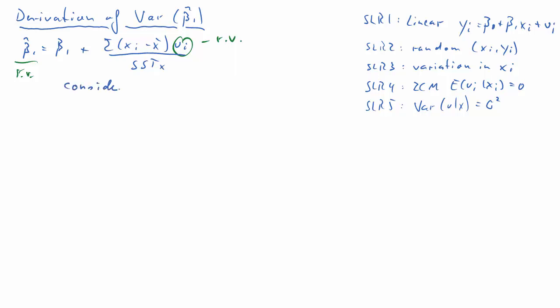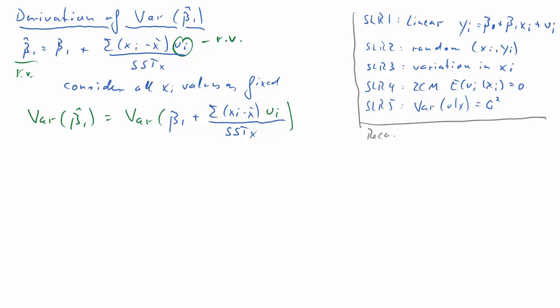The ui's are unobserved error terms. So for the following we will assume that all the values for xi are fixed. Now xi could be a random variable as well but we will just work on the assumption that we consider these as fixed values or in other words we condition on these values. So what we want is the variance of beta1 hat. That makes sense because beta1 hat is a random variable. Now it will be the variance of the right hand side of our equation for beta1 hat. So we will just say the variance of beta1 plus the sum of xi minus x bar times ui divided by sstx.